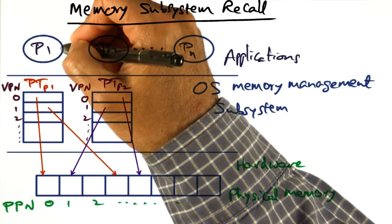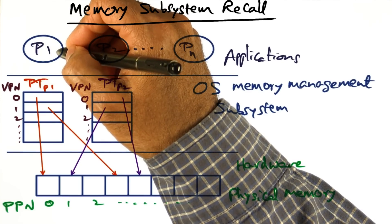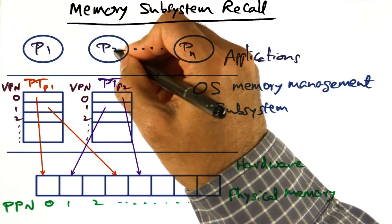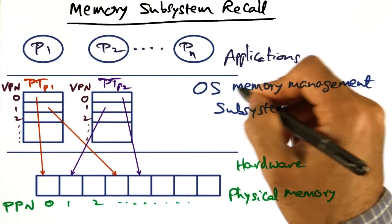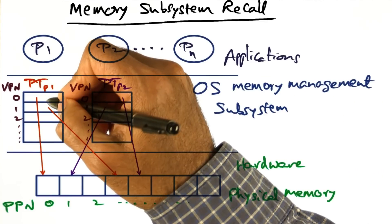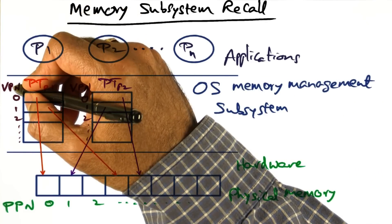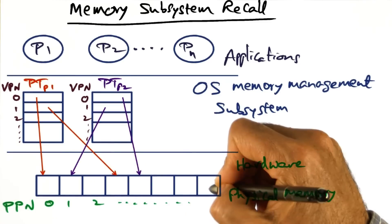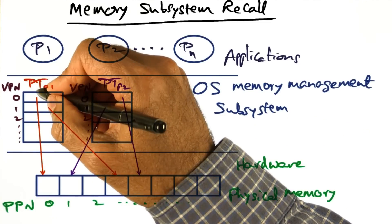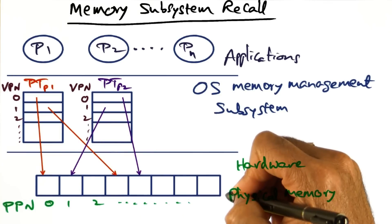The operating system maintains a page table on behalf of each of these processes. The page table is the operating system's data structure that holds the mapping between the virtual page numbers and the physical pages where those virtual pages are contained in the main memory of the hardware.